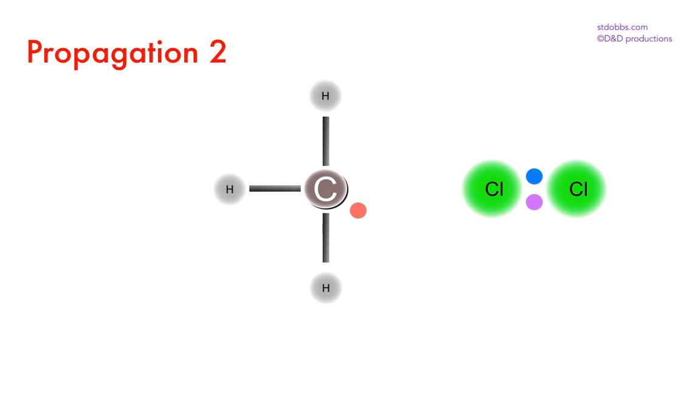If the methyl radical encounters a chlorine molecule, it can strip an electron to form a chloromethane molecule, leaving a further chlorine radical to continue the chain reaction.